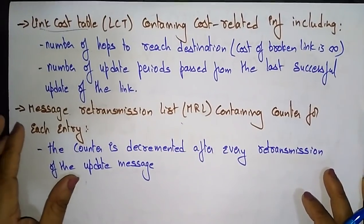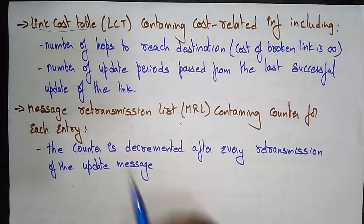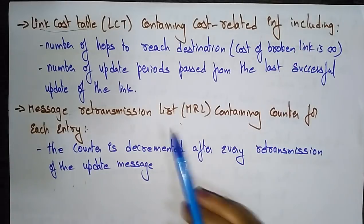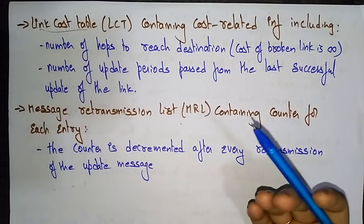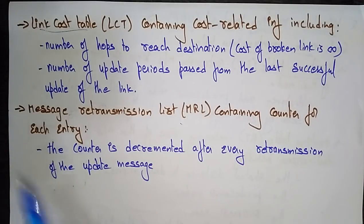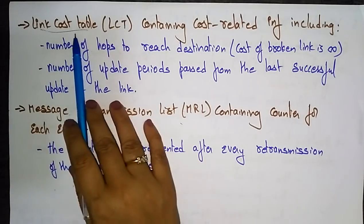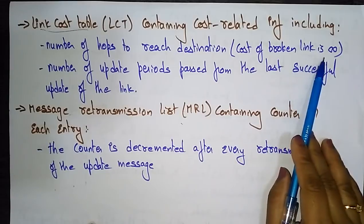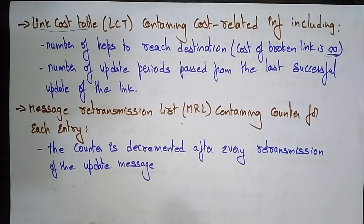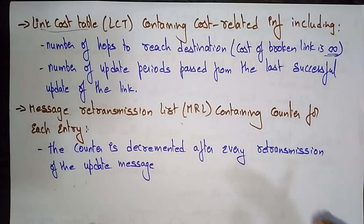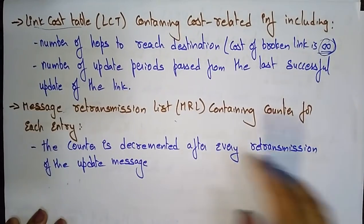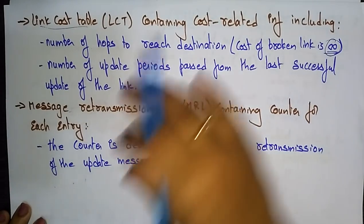The link cost table contains cost-related information: the number of hops to reach the destination, the cost of a broken link (treated as infinity), and the number of update periods passed since the last successful update of the link. We always take the minimum cost path.